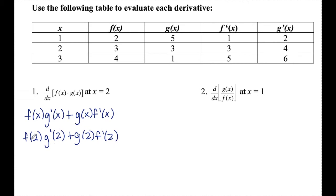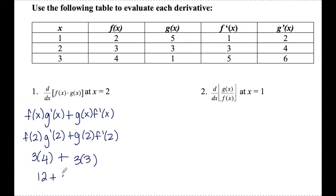From here, I'm going to find the values of each of these from the table. f of 2 is equal to 3. g prime of 2 is equal to 4. g of 2 is equal to 3. And f prime of 2 is also equal to 3. Now I multiply out and add, and I end up with 21 for this derivative at x equals 2.